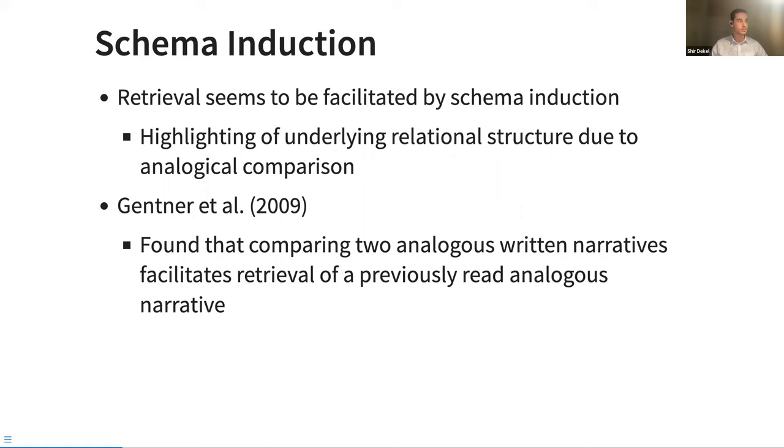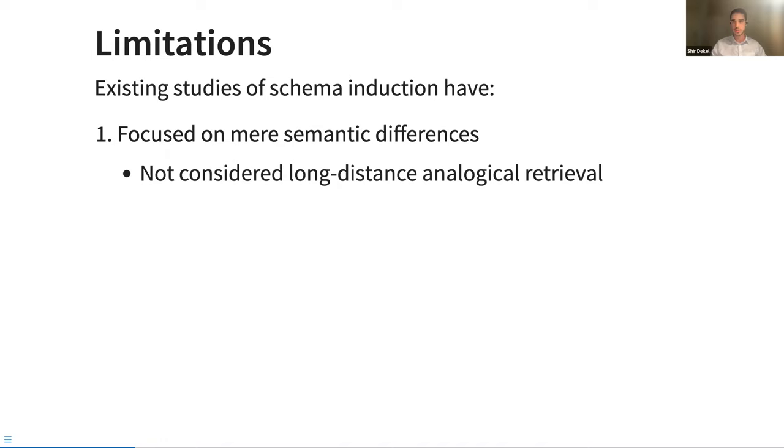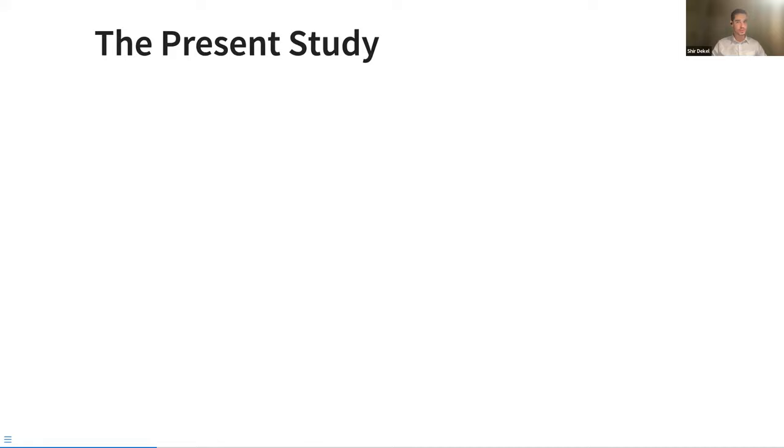That's the context of this work. And one thing that struck us was that this work and a lot of other work on retrieval is mostly done with narrative to narrative retrieval or transfer. And whereas, as I said before, supposedly we've been captivated by this longer distance analogical retrieval in other scenarios. So that's one thing that we wanted to address. And second, there's been kind of the focus in relational structures has mostly been first order, surface versus first order relations, whereas we wanted to focus a little bit more on all three of these levels and see if there's any differences in their influence.